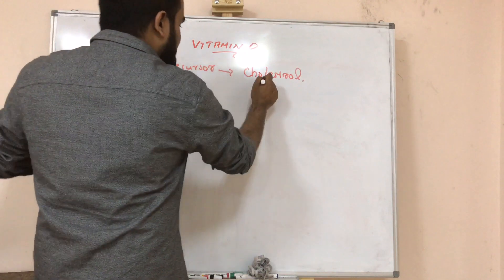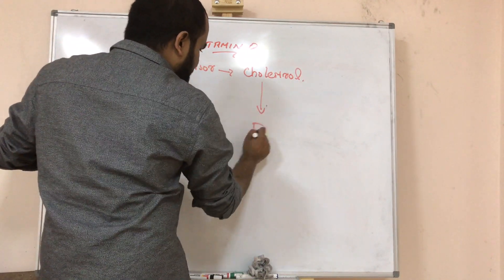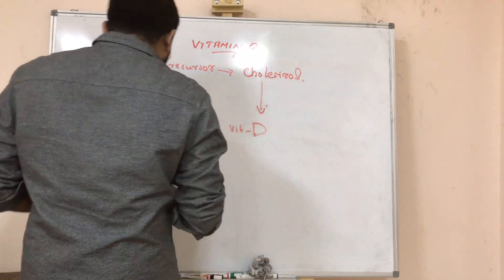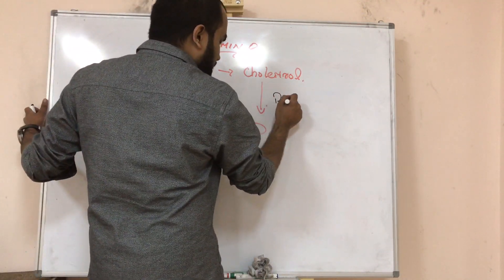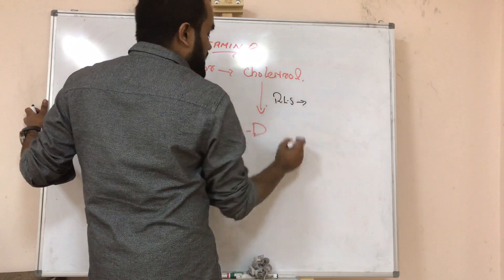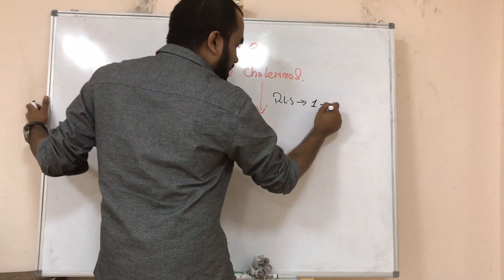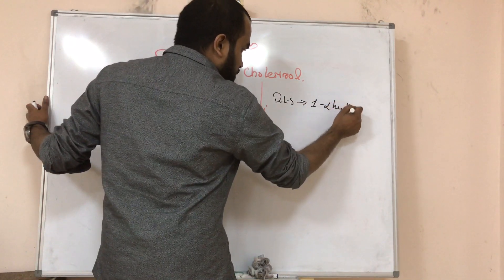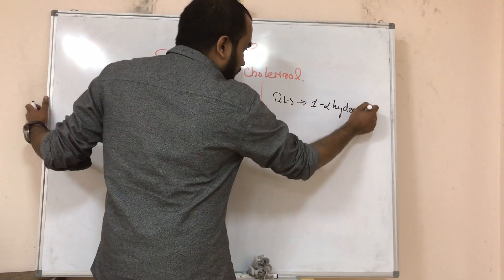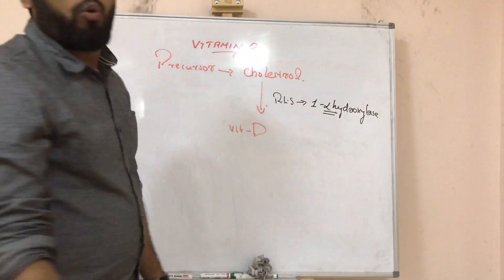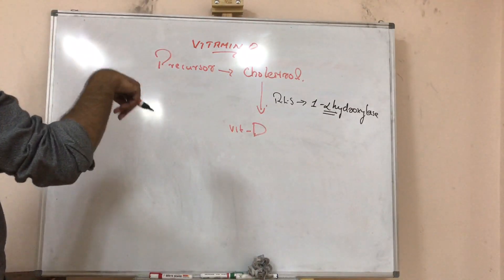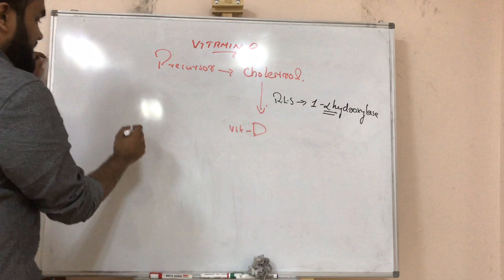Synthesizing of vitamin D from cholesterol we will study in the chapter metabolism of cholesterol. There is a rate limiting enzyme, very important step. What is the enzyme? 1 alpha hydroxylase. It's a direct MCQ. Keep in mind this 1 alpha hydroxylase has been forming vitamin D from cholesterol.